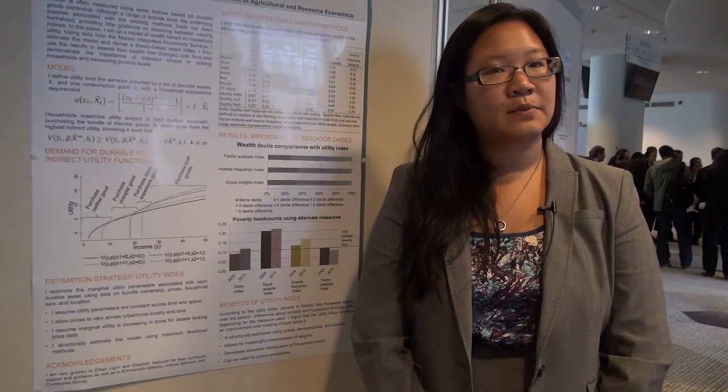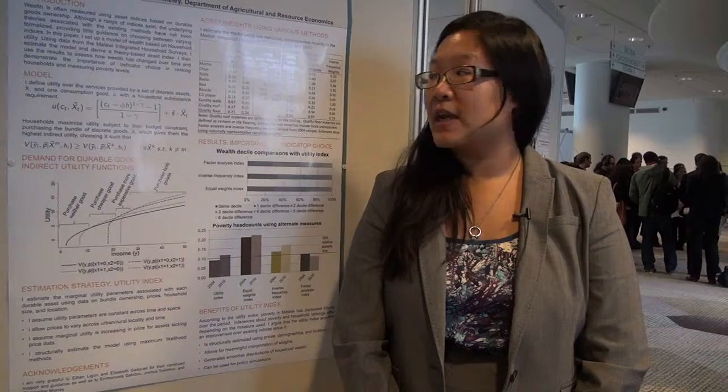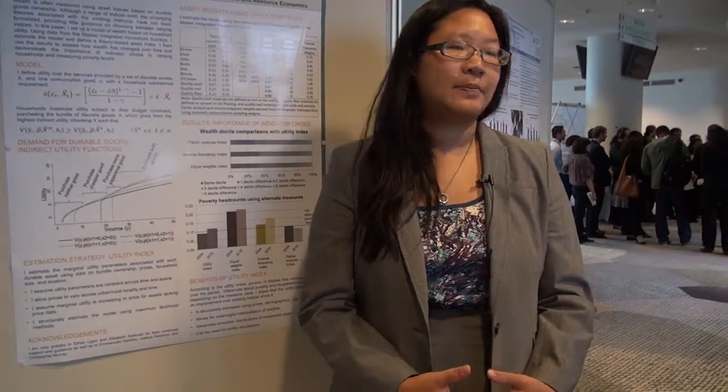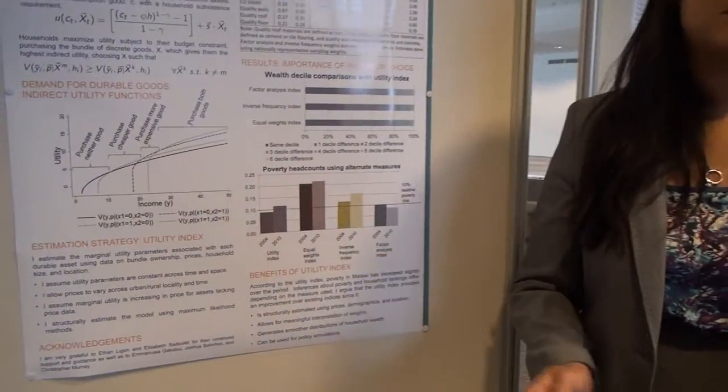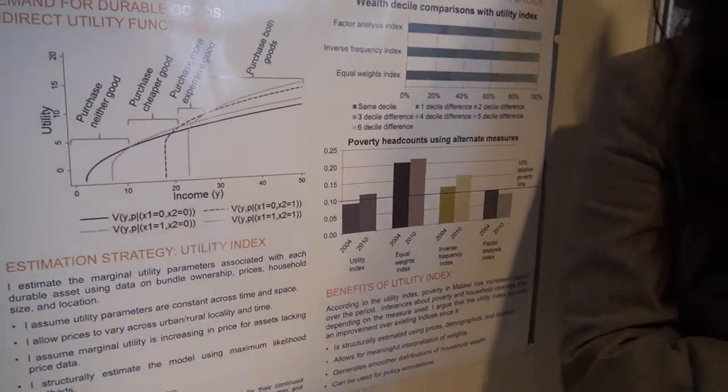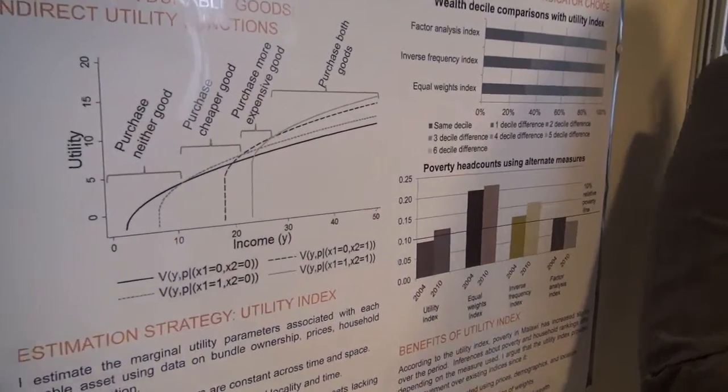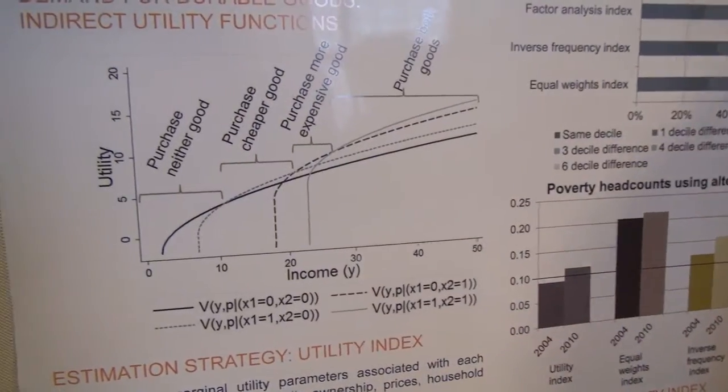The model is fairly simple. Households maximize utility subject to their budget constraint, choosing over a consumption good as well as a set of discrete assets. They compare the utility from different bundles available to them and purchase whichever bundle gives the most utility. This is illustrated in the figure, for the case where there are two discrete goods — a television and a radio.